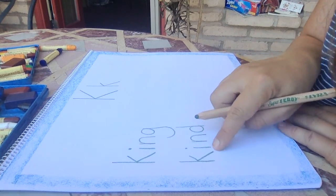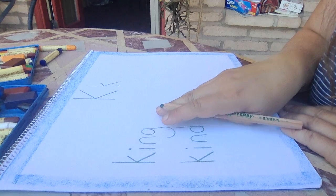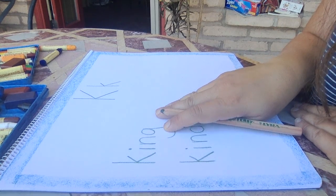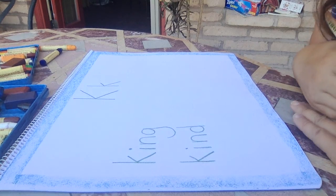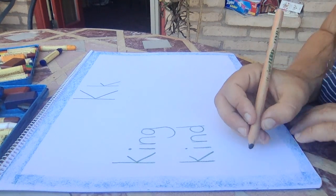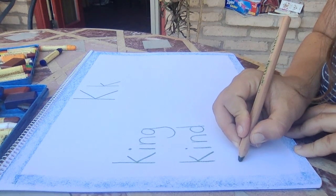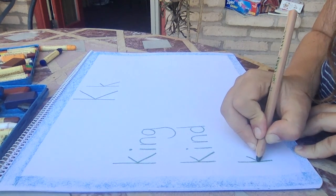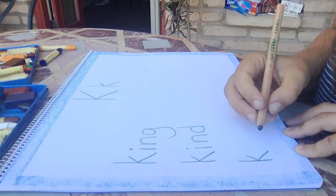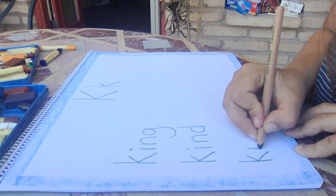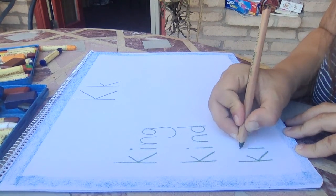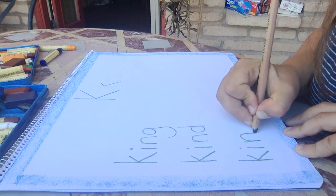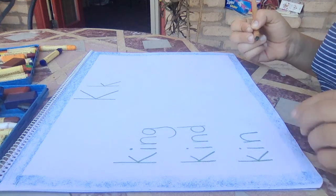There's another word — without that D. 'Kin.' Kin is like your family. Let's write that one: K, I, N. Very nice — kin.